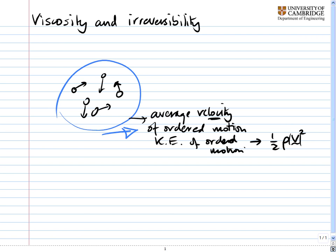On the other hand, there's a lot of extra motion in there that we've missed out because these molecules are moving around so quickly. There's an enormous amount of energy in disordered motion.